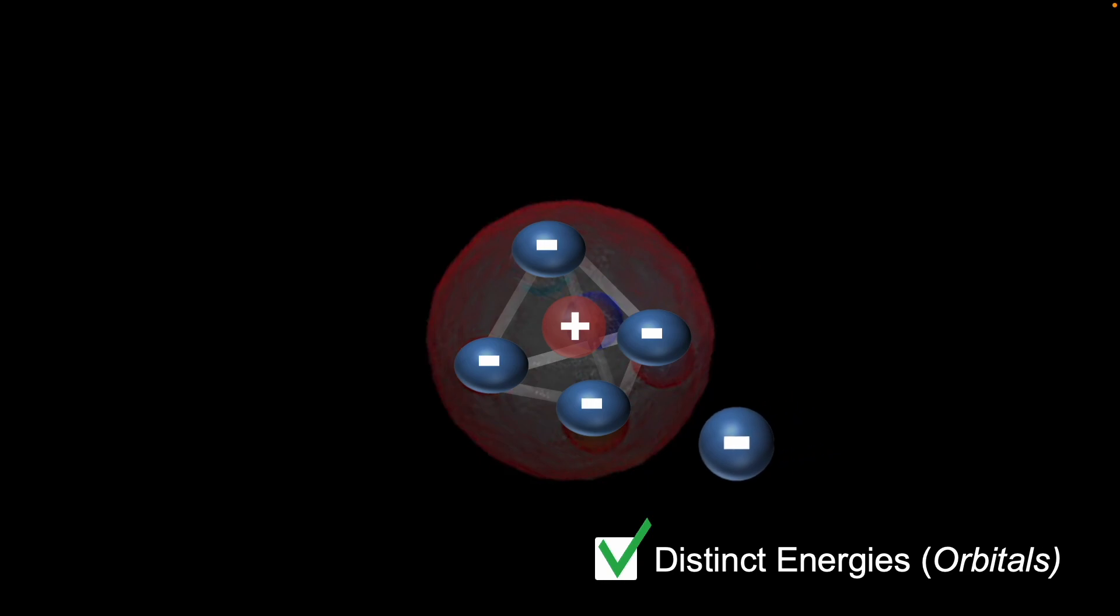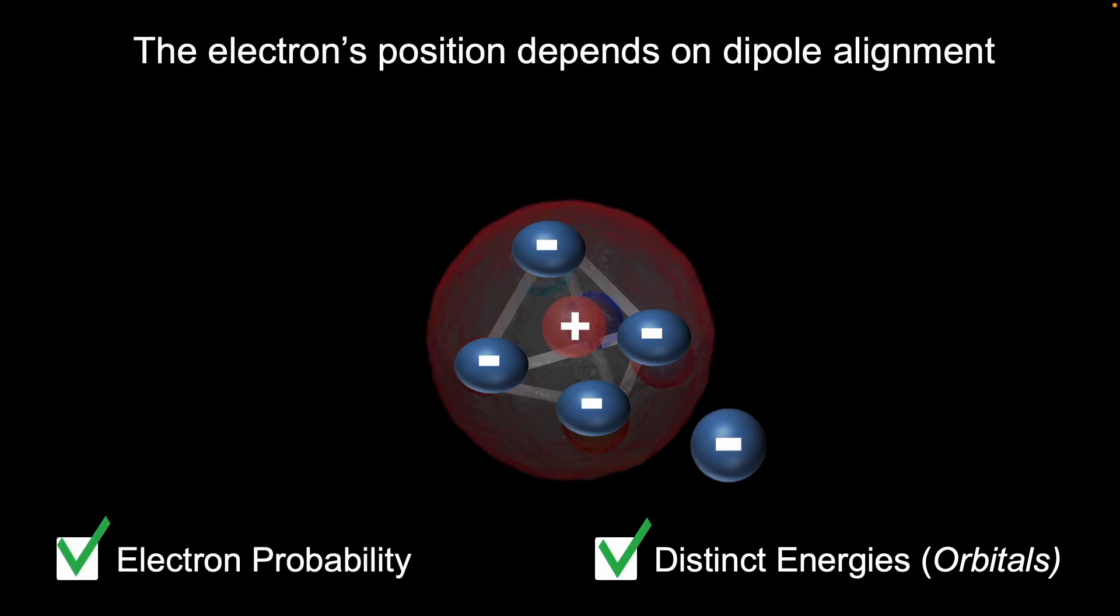The electron's position will depend on the alignment with these repulsive dipoles, all while the proton itself spins. It's constantly being pushed and pulled, and with so many variables, it's easier to estimate its probable location. But it still follows the classical laws of physics.